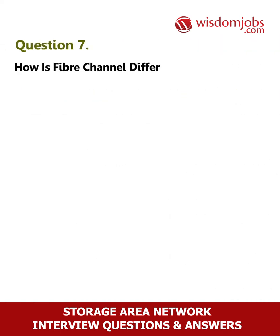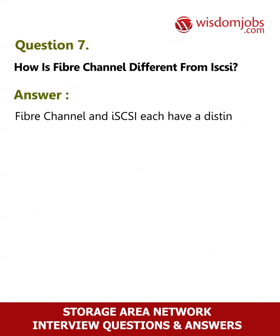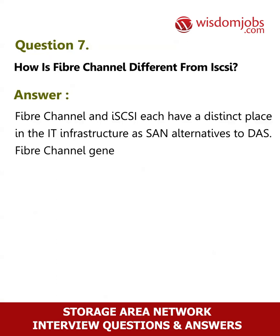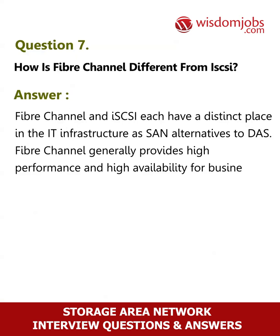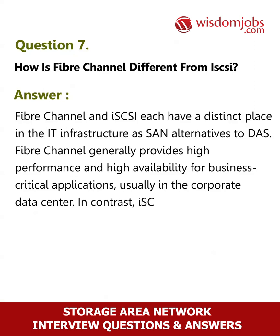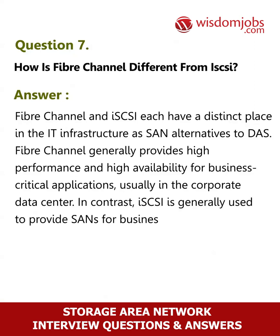Question 7: How is Fiber Channel different from iSCSI? Fiber Channel and iSCSI each have a distinct place in the IT infrastructure as SAN alternatives to DAS. Fiber Channel generally provides high performance and high availability for business-critical applications, usually in the corporate data center. In contrast, iSCSI is generally used to provide SANs for business applications in smaller regional or departmental data centers.